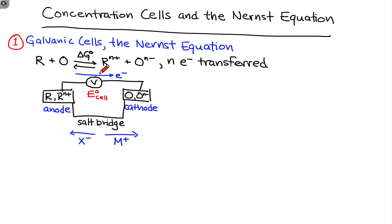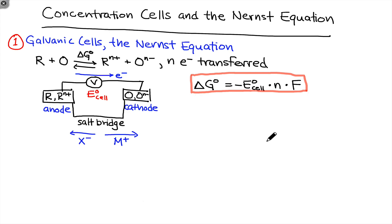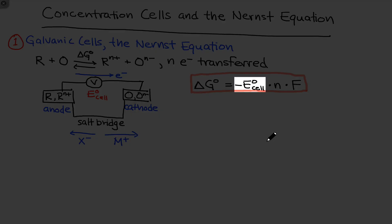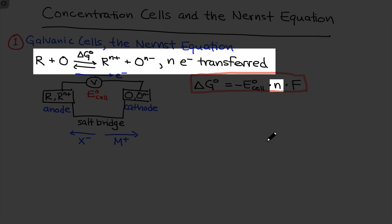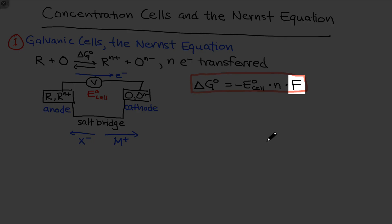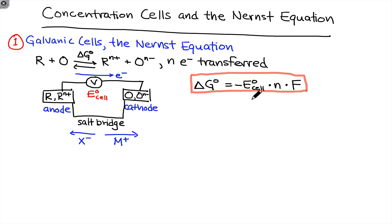Under standard conditions, there's a relationship between ΔG and the cell voltage: the standard free energy change equals the negative of the standard cell potential times N (the number of electrons transferred) times F, a constant representing the amount of charge in a mole of electrons. The units of the cell potential are energy per charge — joules per coulomb, i.e., volts — while ΔG has units of energy per mole. The constant F provides charge per mole of electrons to balance the units. Standard conditions mean one mole per liter of all ionic species and one bar of pressure for all gases.